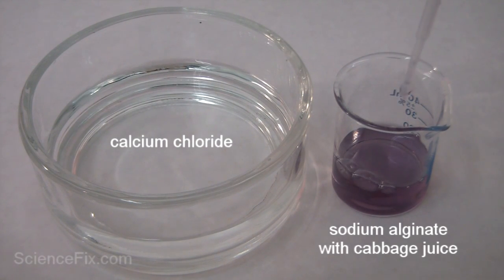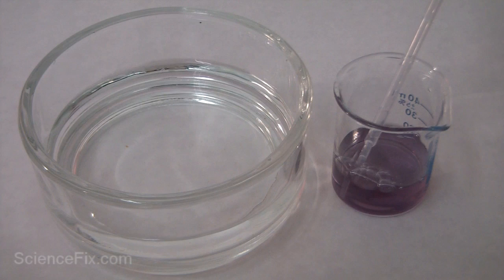In the bowl on the left, we have some calcium chloride solution, and in the small beaker to the right, we have some sodium alginate mixed in with some purple cabbage juice.